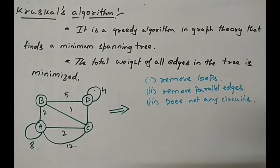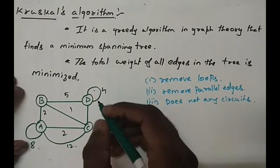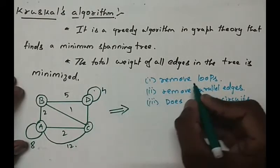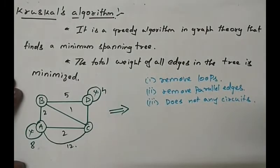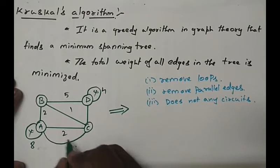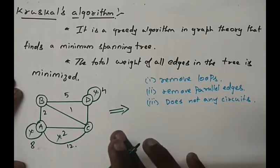So by these three we are going to find the minimum spanning tree. There should not be any loop. So this is deleted, this is deleted and should not even have any loops.